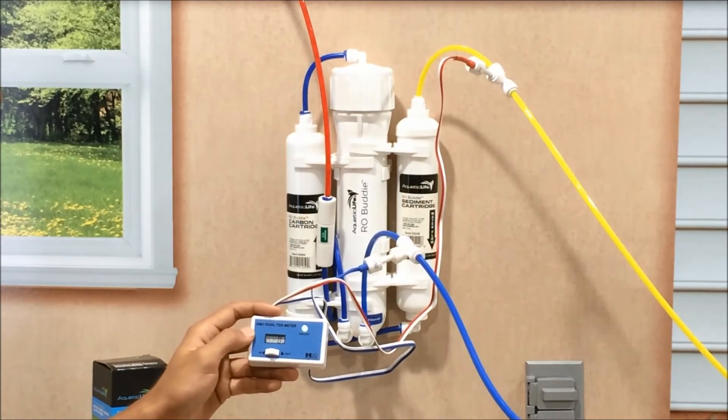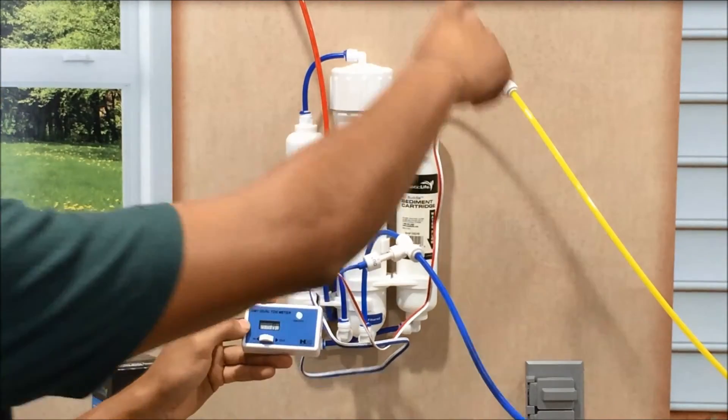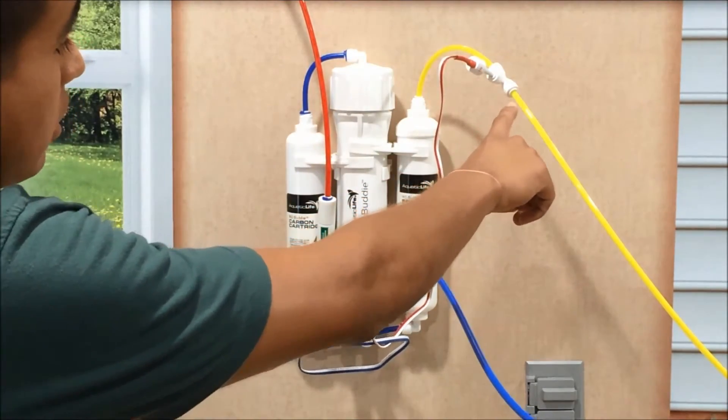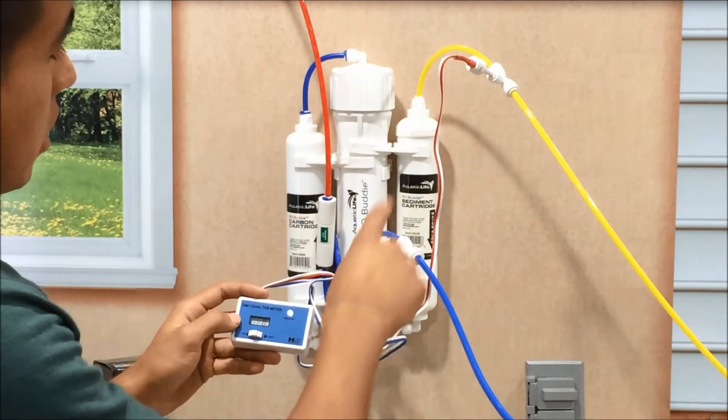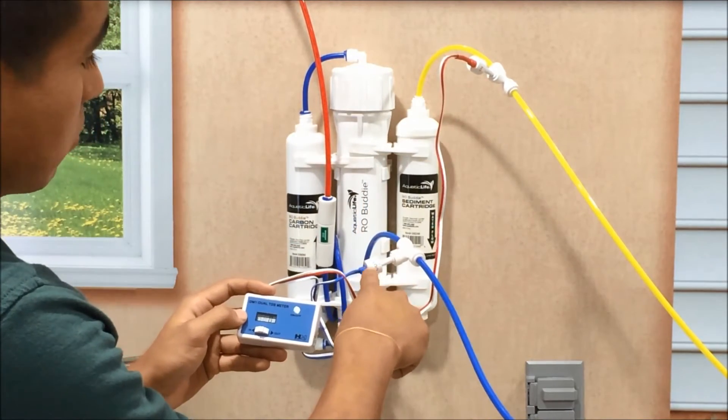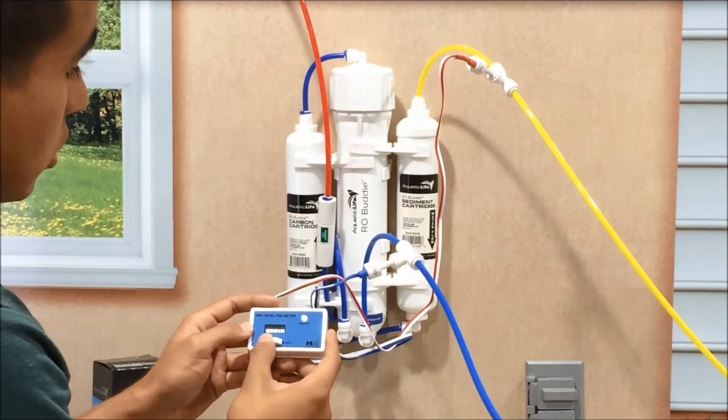Here's an example of the dual TDS meter hooked up. So I just have the included T on the supplied line, the included T on the filtered line, and they're both labeled. So this one's labeled in, and this one's labeled out, and to toggle through them, you'll just switch over.